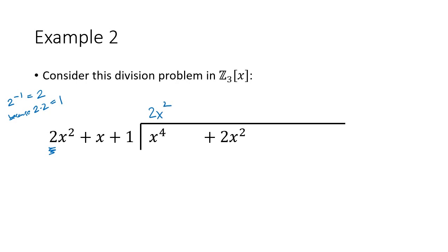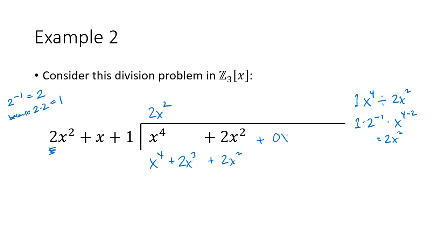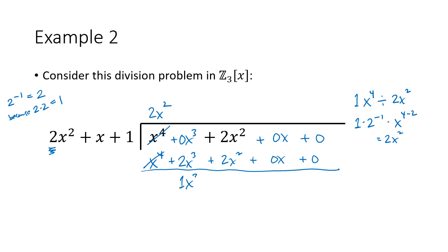So 2x squared goes into x to the 4th. On the side: 1·x⁴ divided by 2x² is 1 times 2 inverse times x to the 4 minus 2, which gives 2x squared. Multiplying: 2x squared times 2x squared gives x to the 4th (since 2 times 2 is 1 in Z3), and 2x squared times x is 2x cubed. After filling in missing terms and subtracting, 0 minus 2 is 1, giving 1x cubed, and 2 minus 2 is 0.